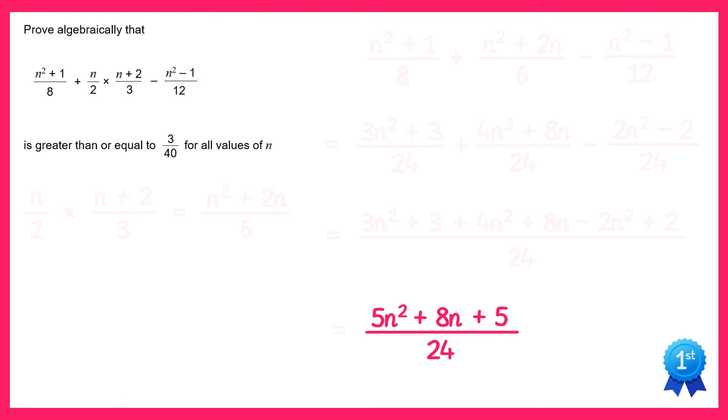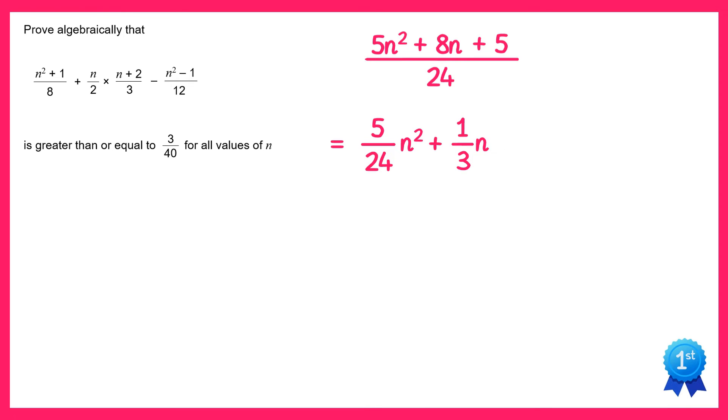So we end up with this. Now we can separate this into three terms: 5n squared over 24, then it's plus 8n over 24, but 8 over 24 will simplify to a third, so it's plus a third n, and then plus 5 over 24.